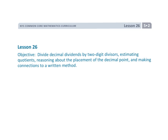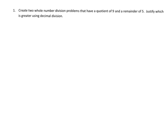This is Grade 5, Module 2, Lesson 26, in which we are dividing decimal dividends by two-digit divisors. We are using the standard algorithm, but we're going to use some number sense to get there rather than blindly jumping straight to the standard algorithm.